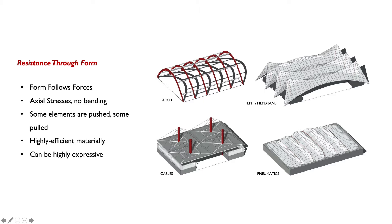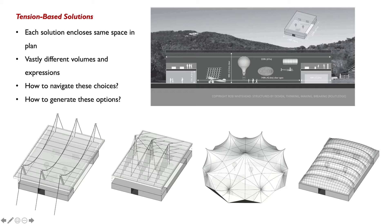Interestingly, these systems can all be highly expressive in very different ways. Tension structures can take on a variety of forms based on the geometry of the cable — straight or curved — the type of supporting elements such as mass, arches, or walls, how they're stabilized with parallel or perpendicular cables or additional dead loading, and how enclosure is achieved, such as hanging a membrane or pneumatics. Each solution encloses the same amount of space in plan, though they have vastly different volumes and expressions.